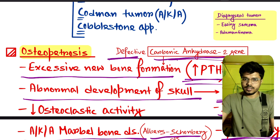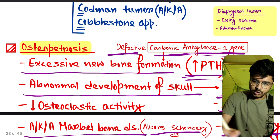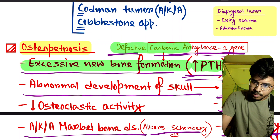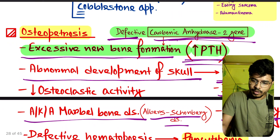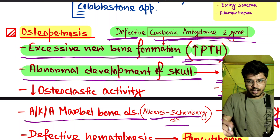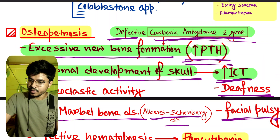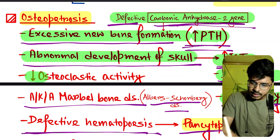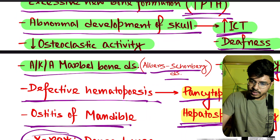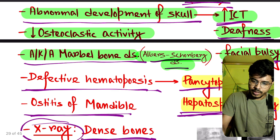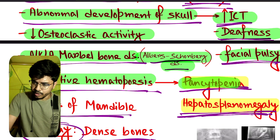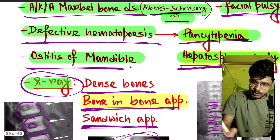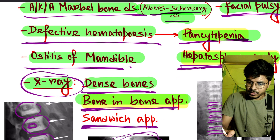Quick recap: Osteopetrosis — excessive new bone formation, increased PTH, defective carbonic anhydrase 2 gene, abnormal development of the skull causing increased ICP, deafness, facial palsy, and decreased osteoclastic activity. Also called marble bone disease and Albers-Schönberg disease. Defective hematopoiesis causes pancytopenia and hepatosplenomegaly. Osteitis of mandible. X-ray features: dense bone appearance, bone-in-bone appearance, and sandwich appearance.